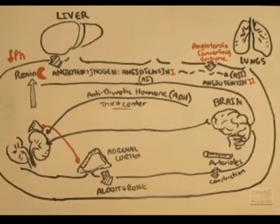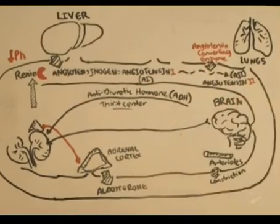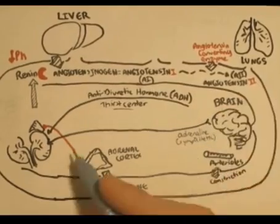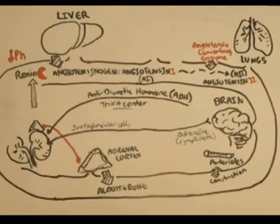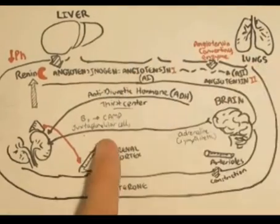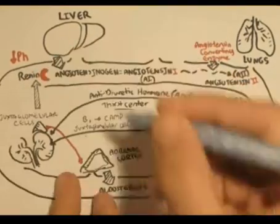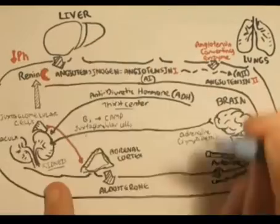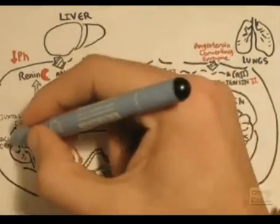Now let's look at this diagram in more detail. The brain senses low blood pressure and targets the sympathetic nervous system to secrete noradrenaline, which targets the juxtaglomerular cells of the kidneys, which secrete renin. Noradrenaline binds to the beta-1 adrenergic receptors, which work through the cyclic AMP second messenger system. The kidney also senses low blood pressure, and specialized cells called the macula densa sense low amounts of sodium and chloride, causing them to stimulate the juxtaglomerular cells to secrete renin.